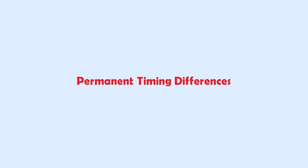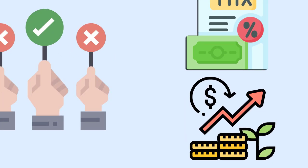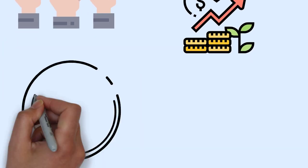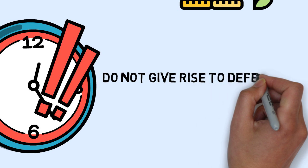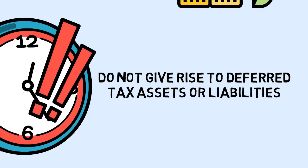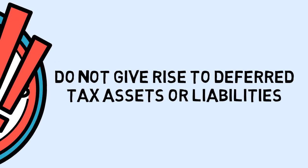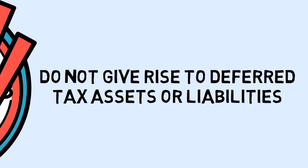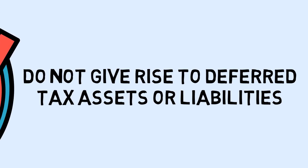Permanent Timing Differences: These are items that cause differences between taxable income and accounting income but do not reverse over time. Permanent differences do not give rise to deferred tax assets or liabilities, because by definition a permanent timing difference is something that will be recognized for either book or tax purposes, but not both.